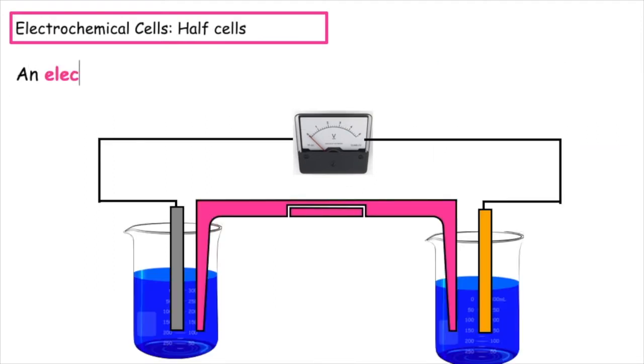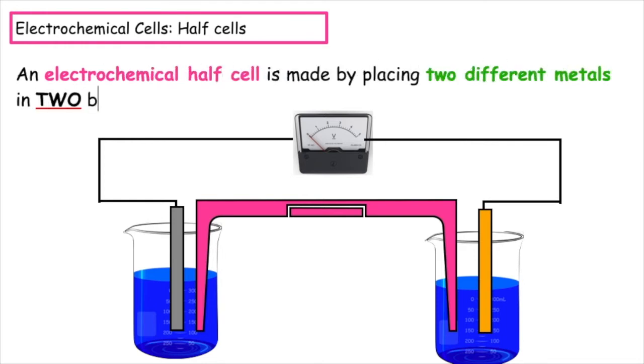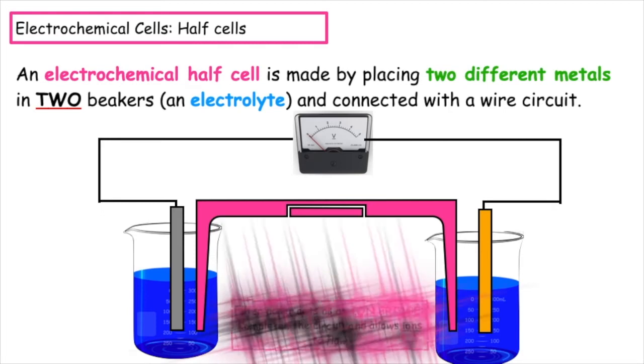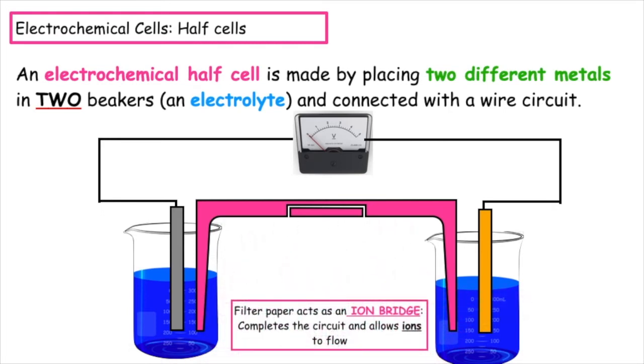An electrochemical half cell is made by placing two different metals in two beakers with an electrolyte and connected with a wire circuit. The filter paper, which connects both of the solutions, acts as an ion bridge. This completes the circuit and allows the ions to flow.